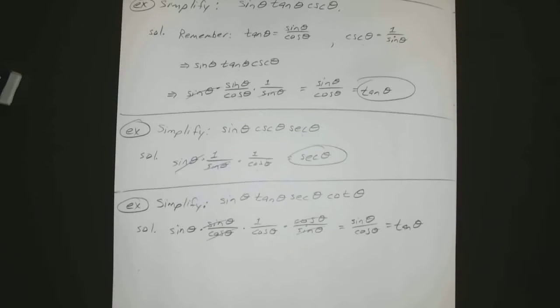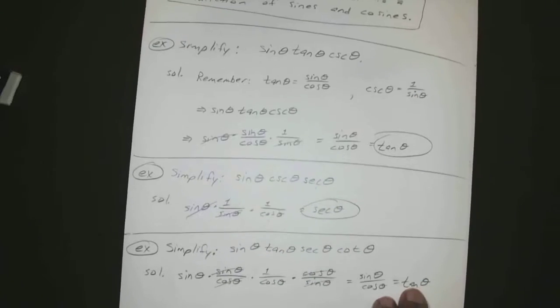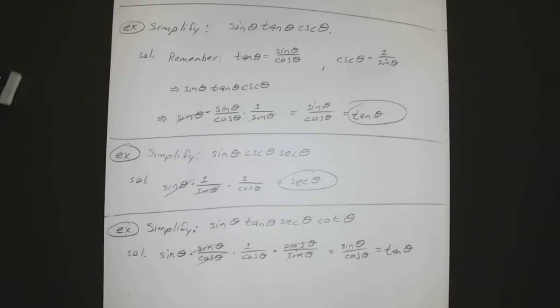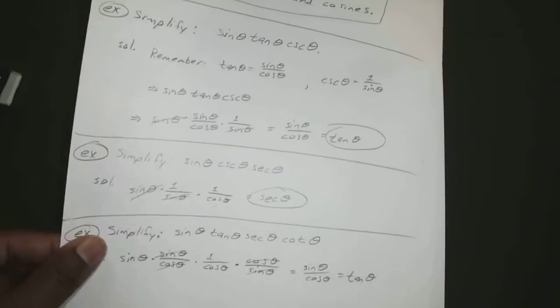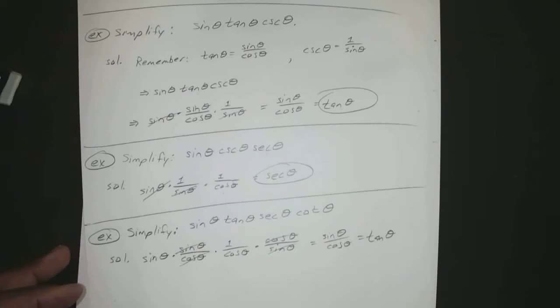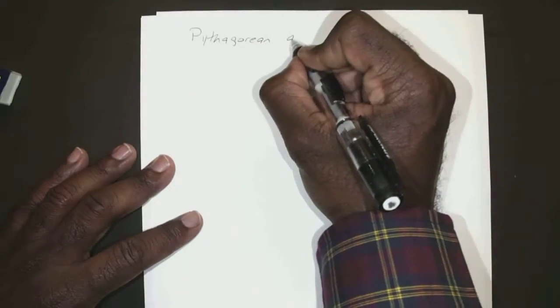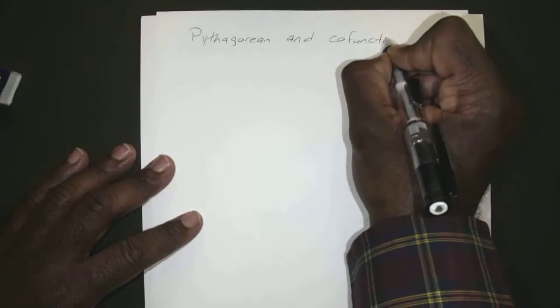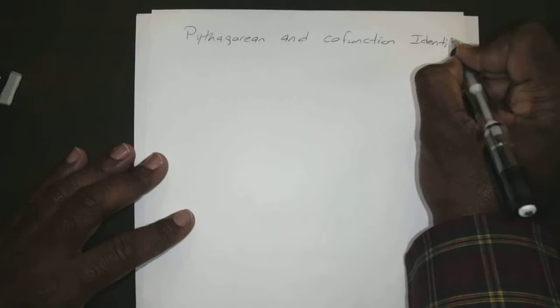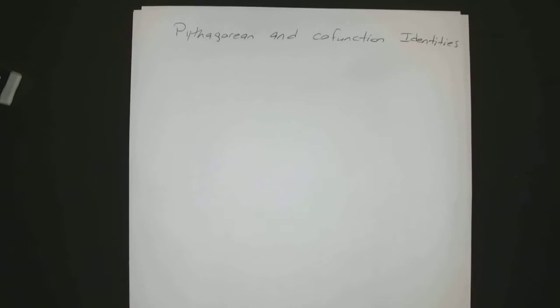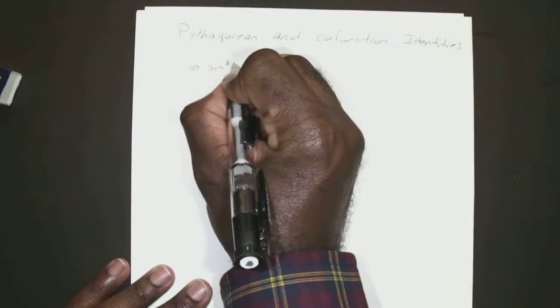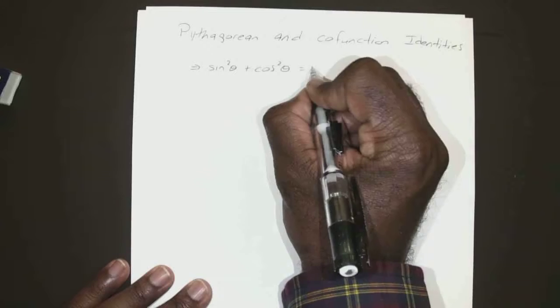All right. So last will be Pythagorean and co-function identities, which is really just a twist on something we already know. So Pythagorean and co-function identities — this all revolves around the one formula.